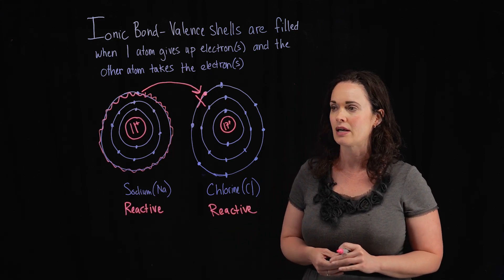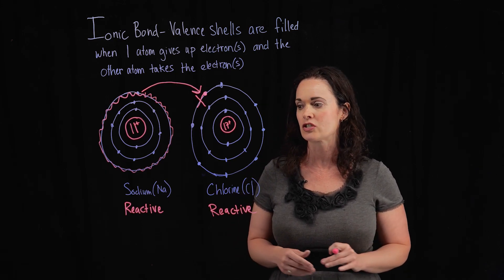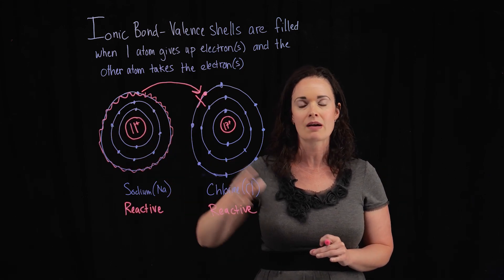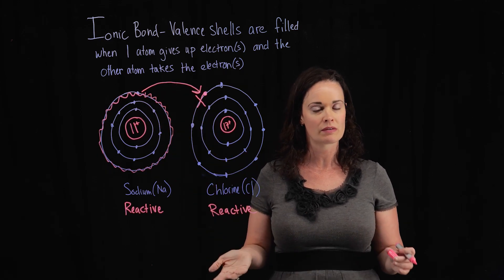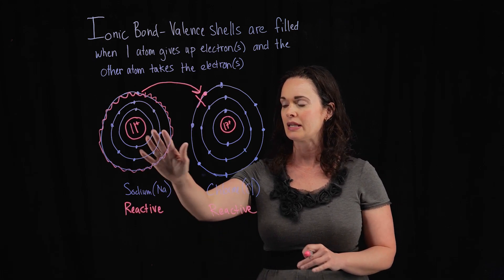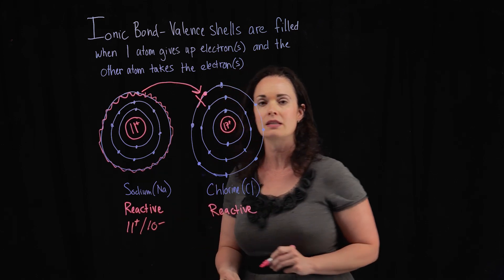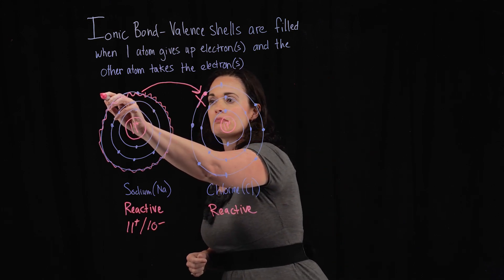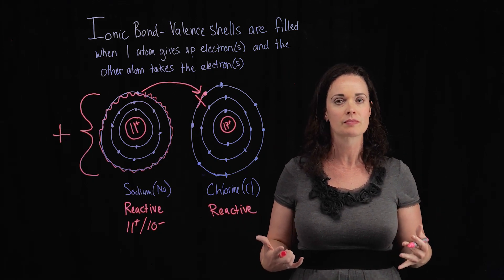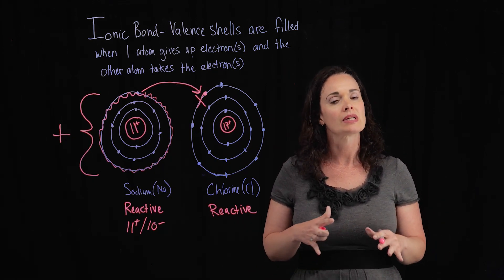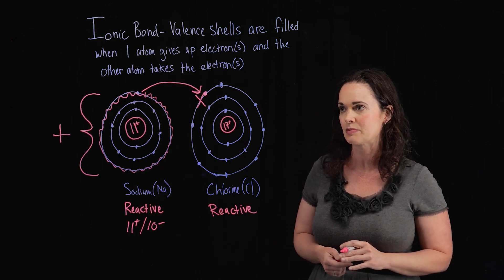Now here's an exception to the rule that atoms are neutral on their own. With sodium, we still have 11 protons — 11 positive charges — but we got rid of one electron, one negative charge. So we now have 11 positive charges and only 10 negative charges, giving this atom an overall positive charge. That is what an ion is: an atom that has given up or taken on an extra electron and has become charged.